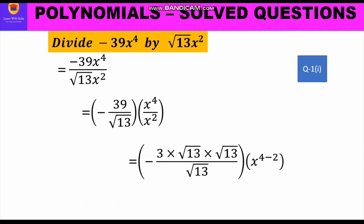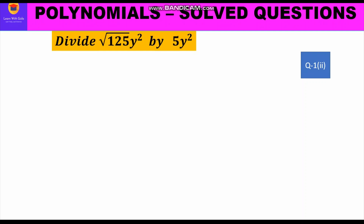We shall solve the coefficient part: 39 can be written as 3 into √13 into √13, and in the denominator we have √13. For the variable part, we apply the laws of exponents and subtract the powers, writing x raised to power 4 minus 2. The √13 terms cancel, and we are left with -3√13 x square.